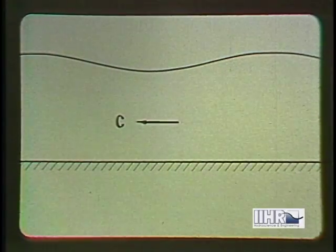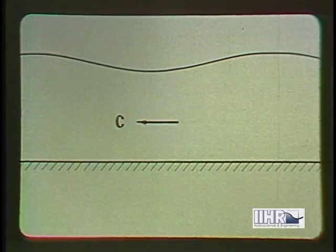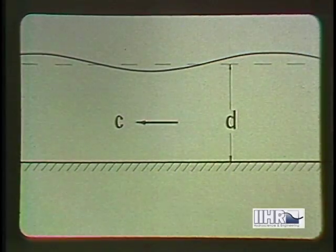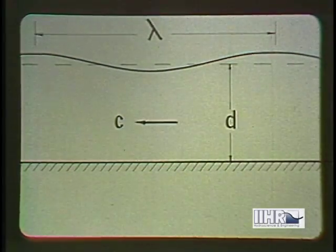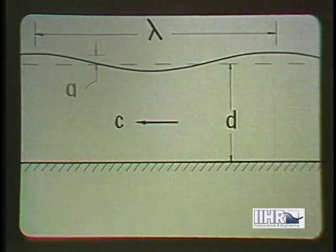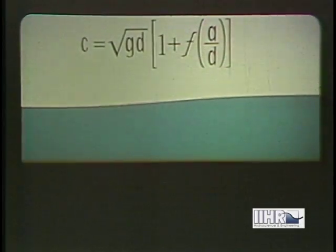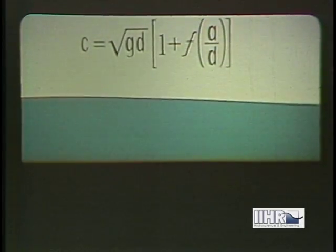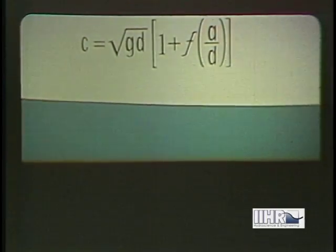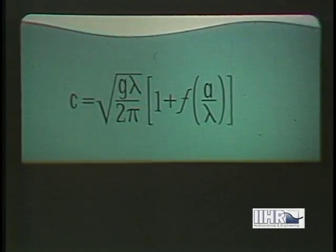The celerity of a wave depends, in addition to gravity, upon three factors. The depth d of the fluid stratum over which it moves, the wavelength lambda, and the wave amplitude A. If the wavelength is large compared to the depth, its effect is negligible, and it is the depth that controls the celerity, as in the case of tides. If, on the contrary, the depth is large compared to the wavelength, it is the wavelength that controls the celerity, as in storm waves in the ocean.